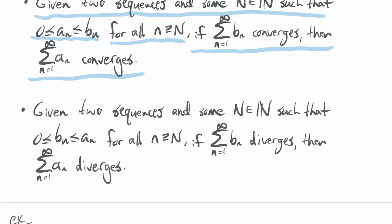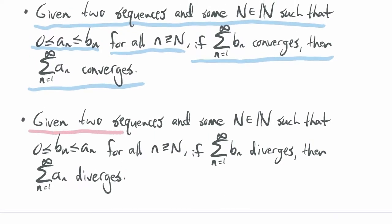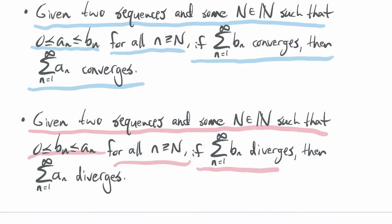On the other hand, given two sequences with the same setup, if b_n ≤ a_n — so b_n is the smaller series — for all little n greater than or equal to big N, and if the series for b_n diverges, then the larger one automatically diverges as well. If you have a series that you know to diverge and you show it's bigger than the one you know diverges, then it has to diverge as well.